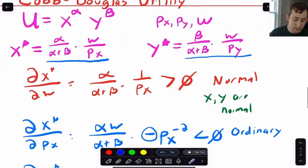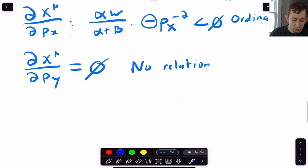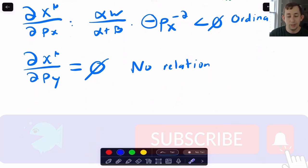Now notice that for both of these Marshallian demands, for x star there's no py in here, and for y star there's no px in here. So that means if I take the cross-price elasticities for x or y, I'm going to get zero, which means that these two goods are not related to each other.